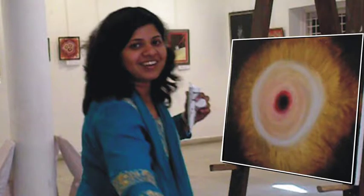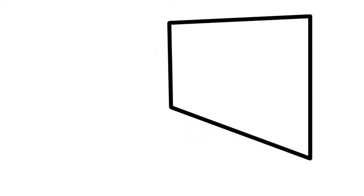A simple question: what is the shape of the canvas as you see it? A rectangle? We all know this to be the shape from past experiences. But this is how we actually see it — the near side appears longer than the far side, a trapezoid.